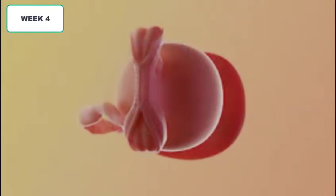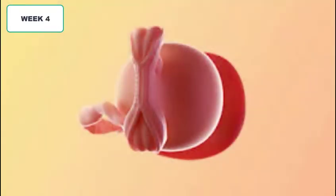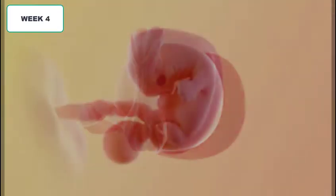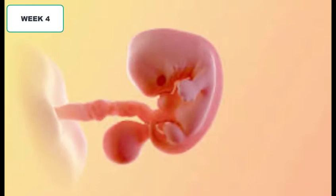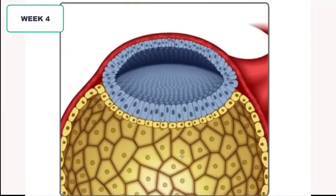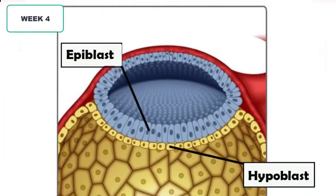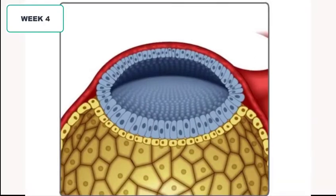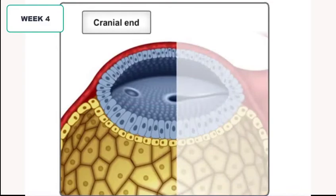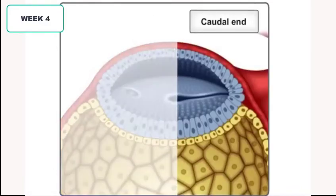During week four, meaning two weeks after fertilization, as the zygote grows further it now starts shaping itself into a fetal-like organism called an embryo. The embryo starts forming a bilaminal cell layer — the epiblast on top and the hypoblast below. A cleavage forms miraculously from the center of the epiblast cell and marks a cranial end and the caudal end of the developing embryo.